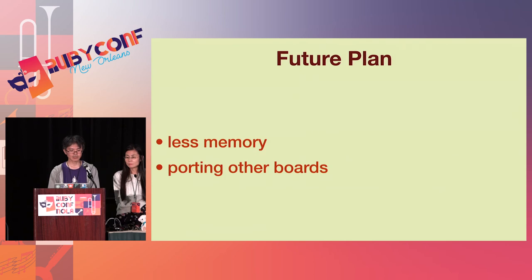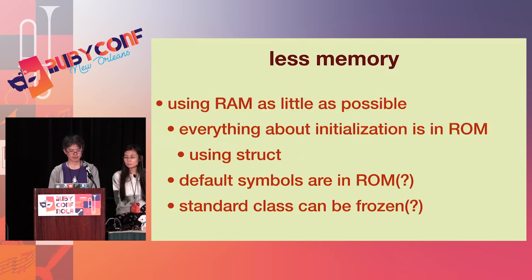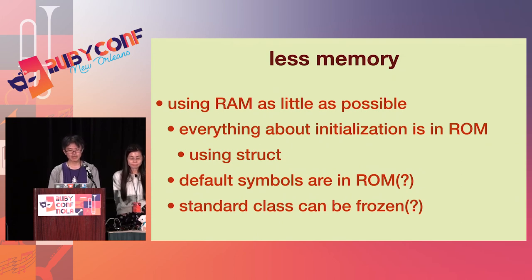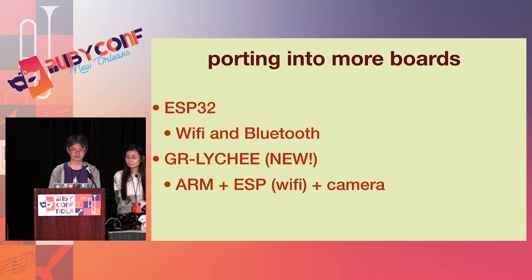At last, let's talk about future plans. During development of Cesaret, our biggest issue was memory — we want to solve it. Another plan is porting to other boards. Especially in Nucleo, we had trouble with memory in the initialization phase and it crashed. To solve the issue, we should use more ROM rather than RAM. It's not easy and might impact other MRuby users, but we cannot ignore it. Another challenge is porting into non-ARM chips such as ESP32. Renesas will release another ARM plus ESP board, letting you use ARM and ESP together — we are eager to accept this challenge.